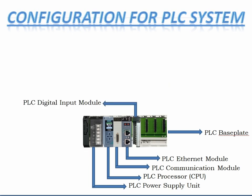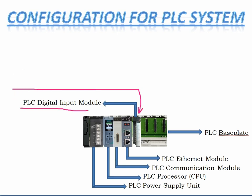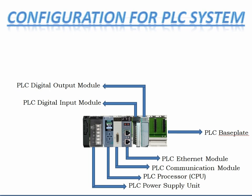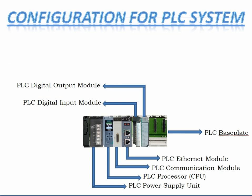We have added the input module. This input module receives signals from the input devices — the signal from the field devices will be received by this module via relays and fuses. Next, let us add the digital output module. This digital output module will give output to the relays, and from relays the output devices will energize. According to the program, this will give output to the digital output devices.